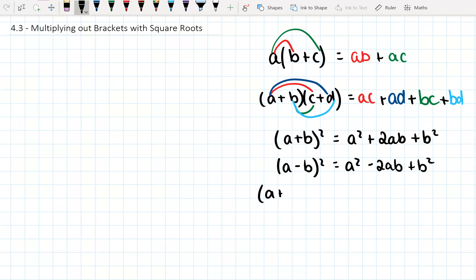The last one is (a + b)(a - b). And that gives us a² - b². And that's the difference of two squares. So we have here the perfect squares. And the last one is the difference of two squares.